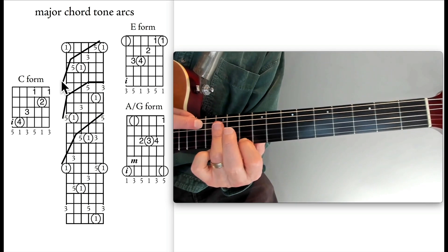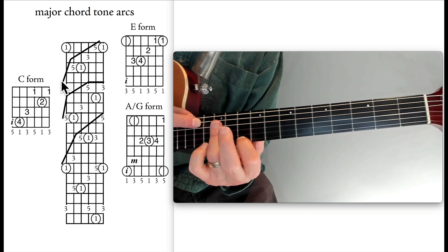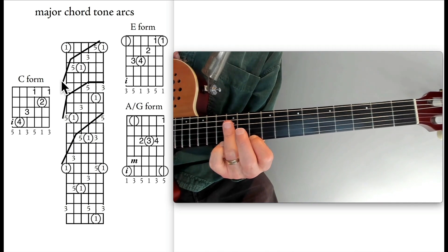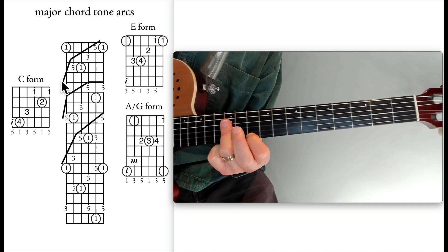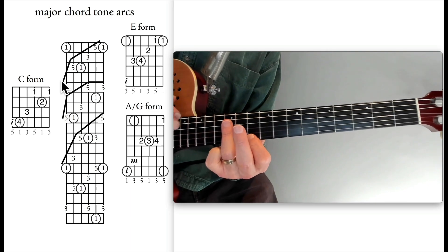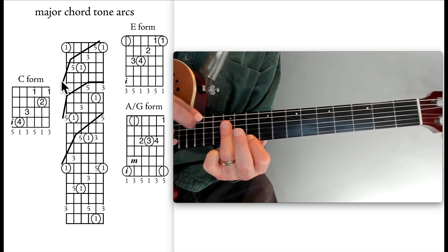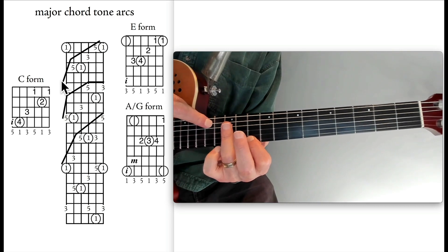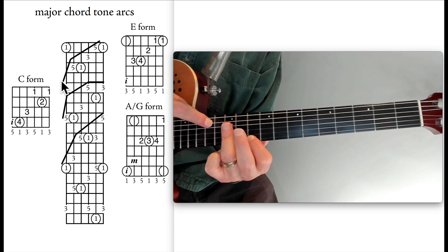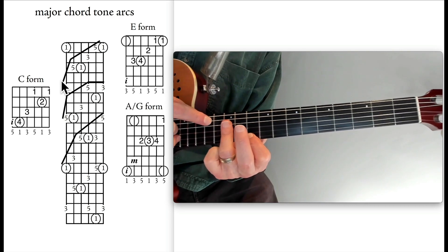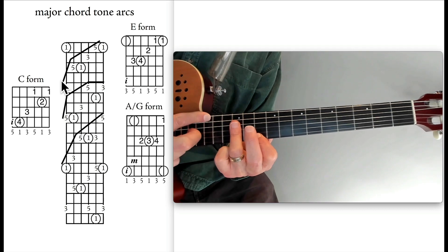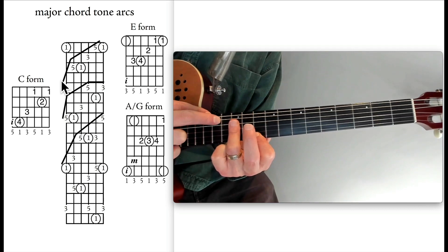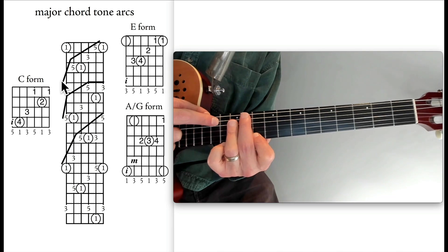The third and last arc is the A-G form. It's the notes of an A-form G chord at the 10th fret, adding these notes on the sixth string at the 15th fret (G) and the fifth string at the 14th fret (B). I'm fretting those with my right hand index and middle fingers, then strumming with my thumb.